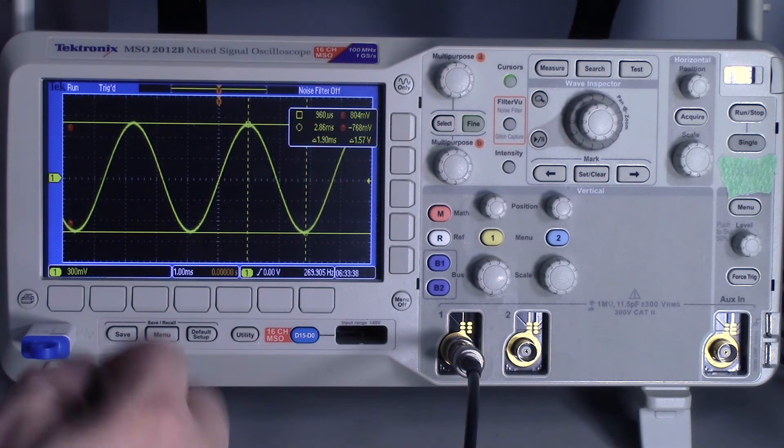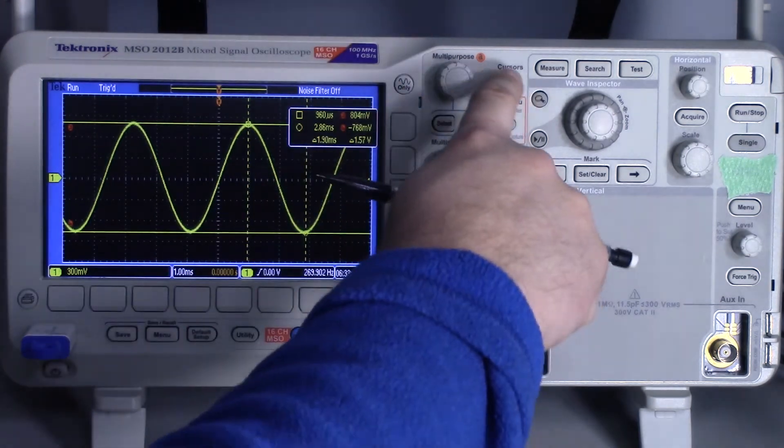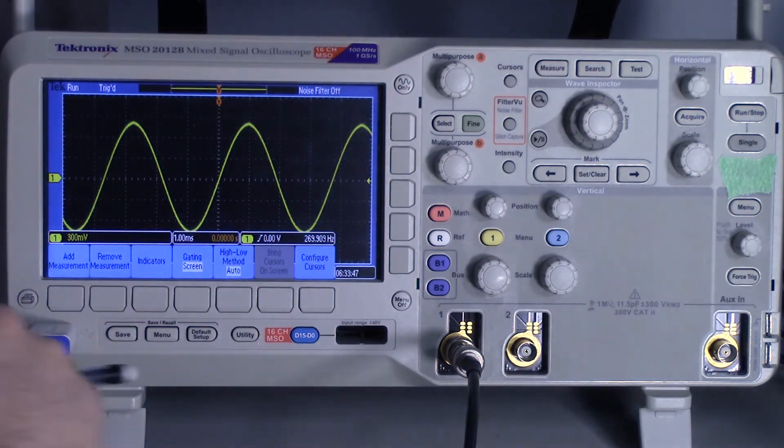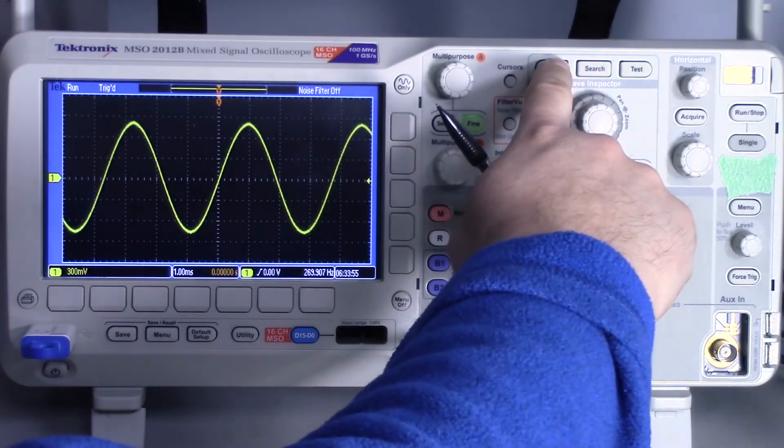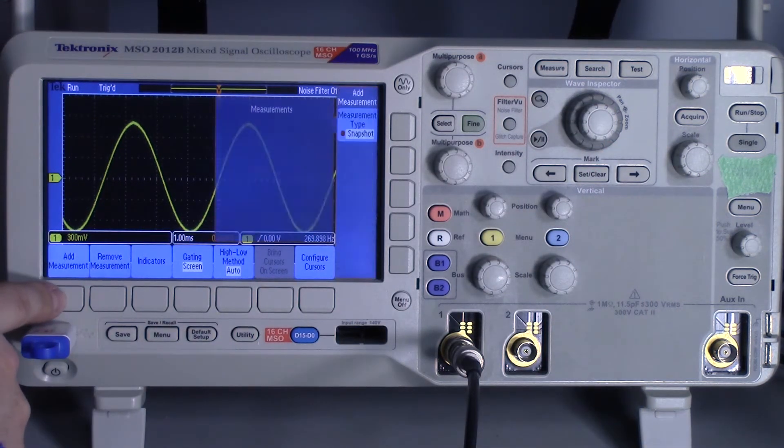All right, now a third way to make measurements on the oscilloscope, and this is probably the easiest, so we're going to turn the cursors off, is to actually have the machine do the measurements for me. So to do that, just press the measure button.